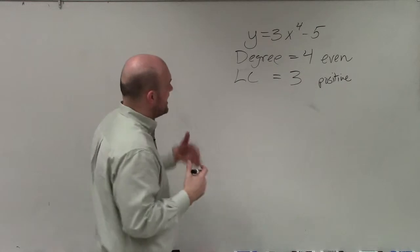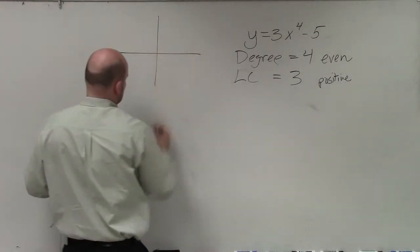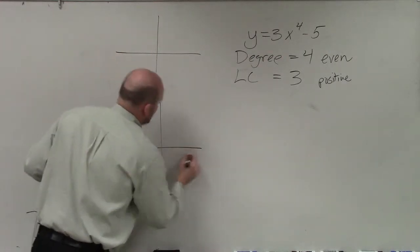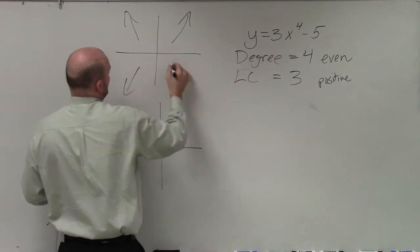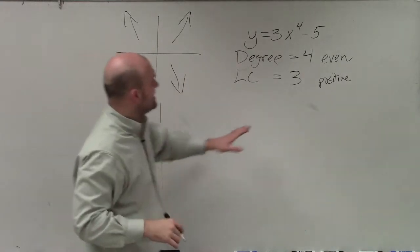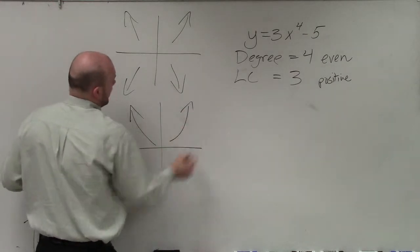So now that we basically have an even degree, our leading coefficient test tells us that with an even degree, our graph either opens both up or it opens both down. And if it's positive, then therefore our graph is just going to open both up.